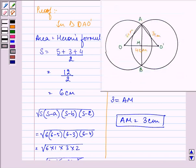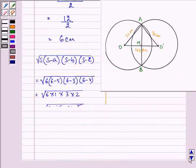Now further we need to find out the length of AB. So that will be twice of AM.